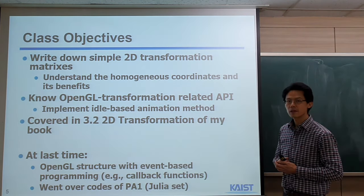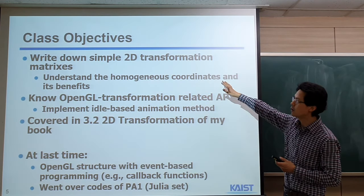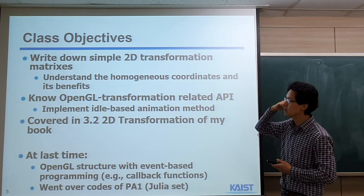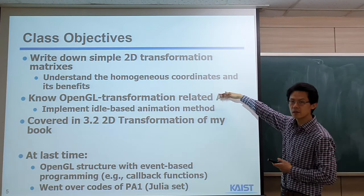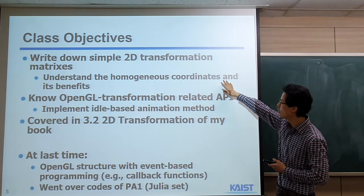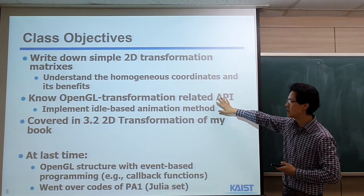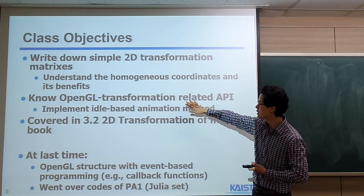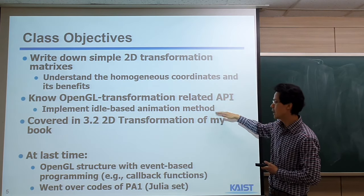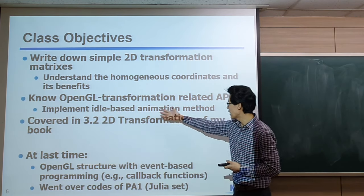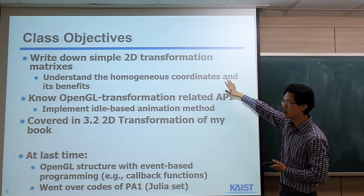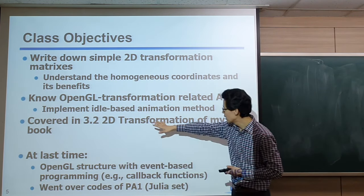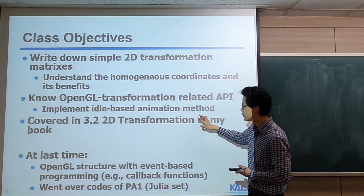At the end of this class, I want you to be able to write down a simple 2D transformation matrix. We will also introduce homogeneous coordinates and you will see the benefits of using them. Then we will talk about some OpenGL transformation-related APIs, idle-based animation methods, and these topics are covered in chapter 3.2 of the book.